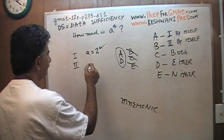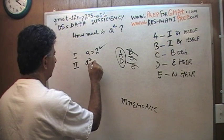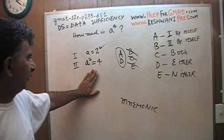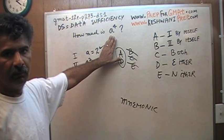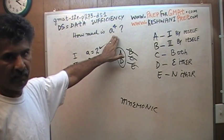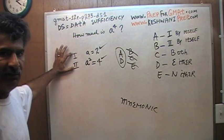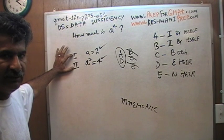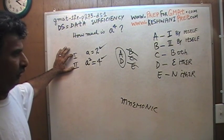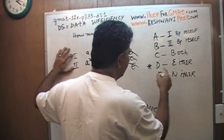Here's the second statement: A squared equals 4. If A squared equals 4, can you answer how much is A to the fourth? Obviously you can — A squared equals 4, so A to the fourth can easily be figured out. Which means either of these statements by itself is enough to answer the question. That's your answer: D. D stands for either.